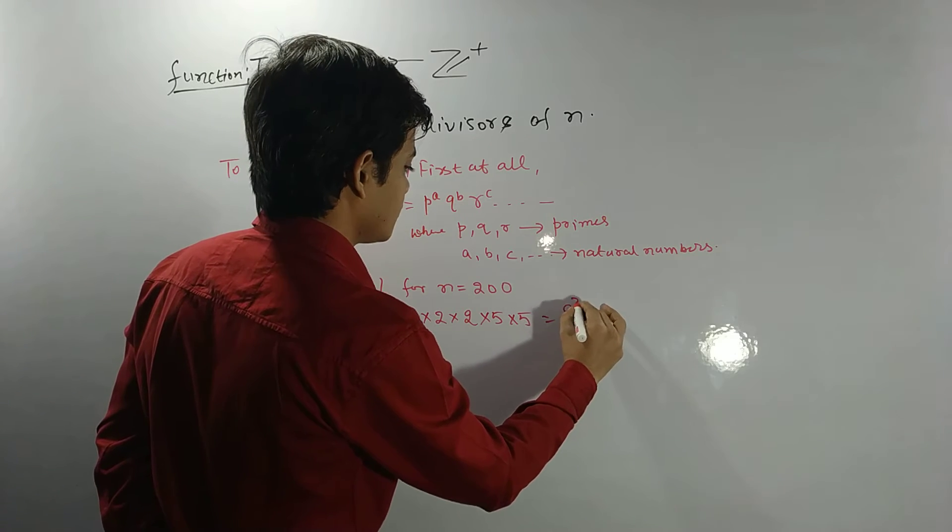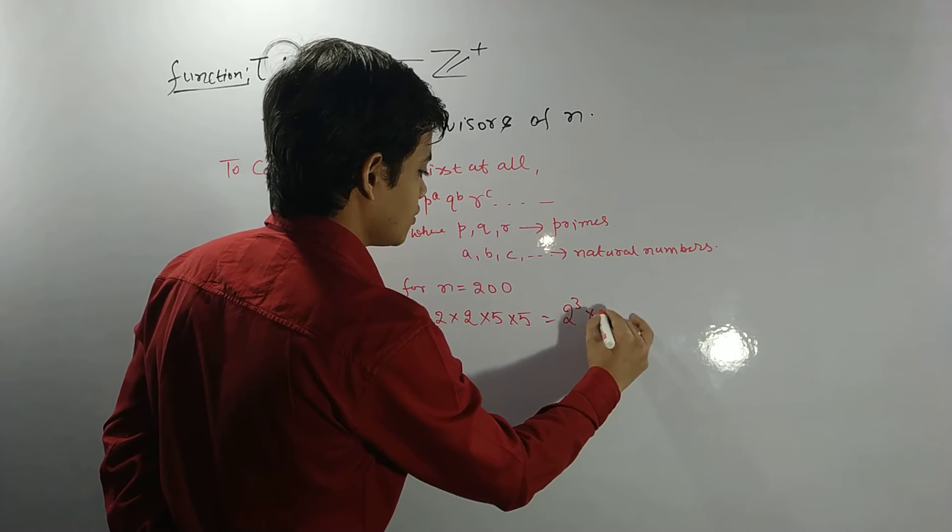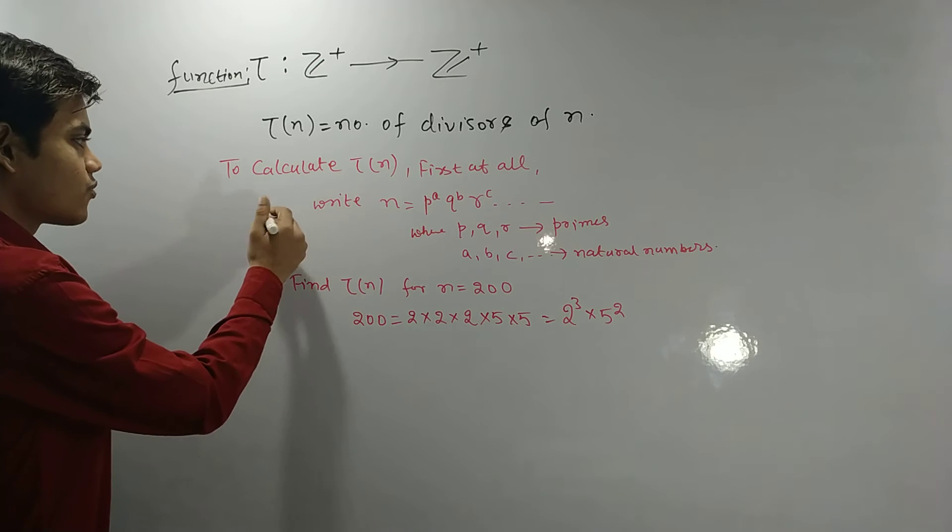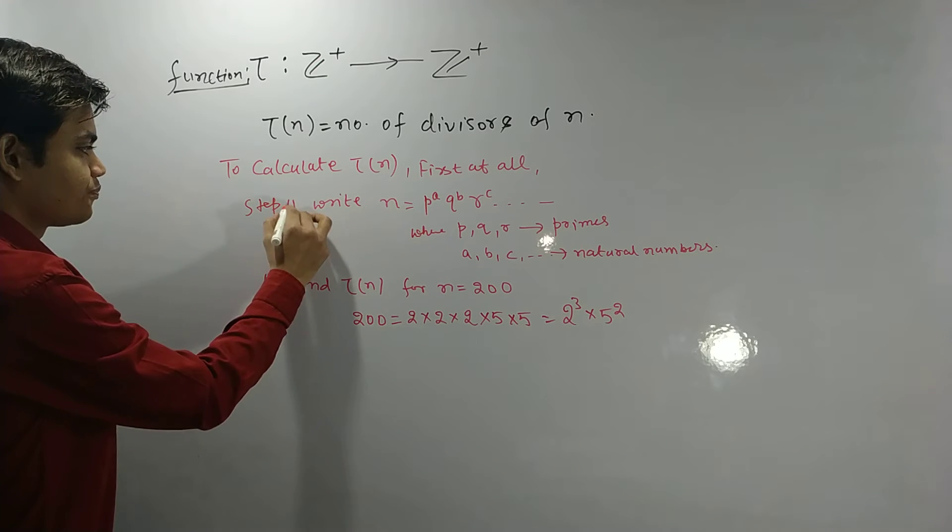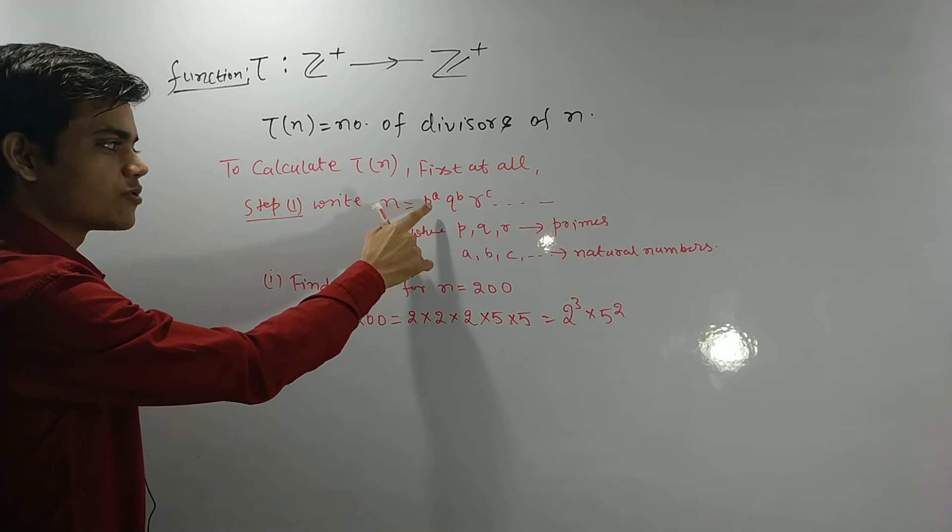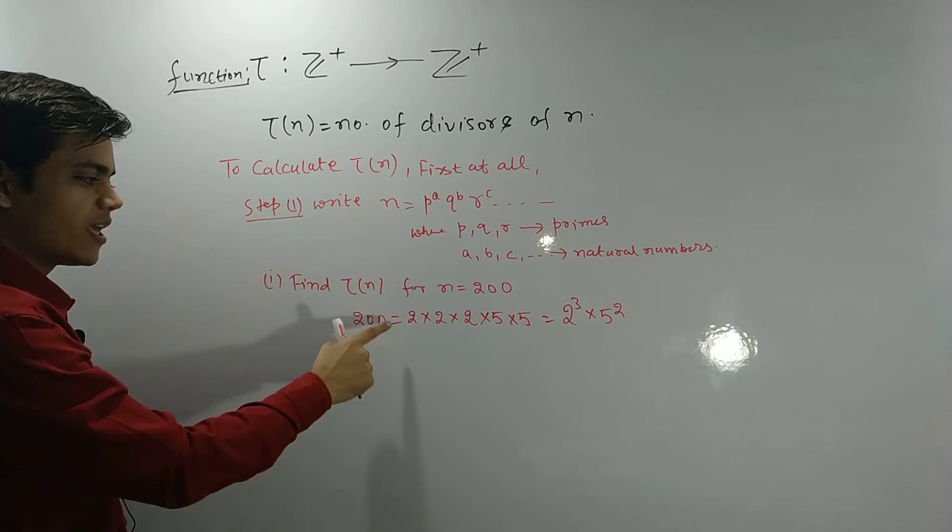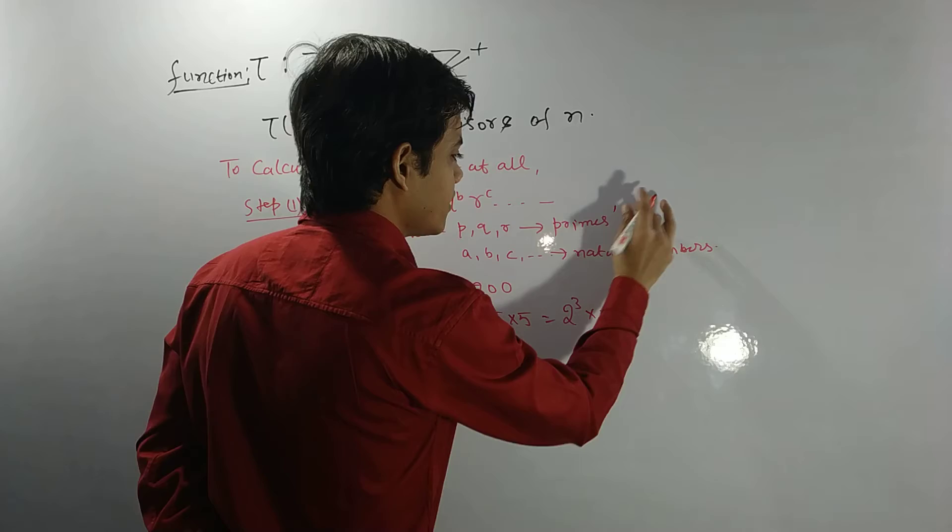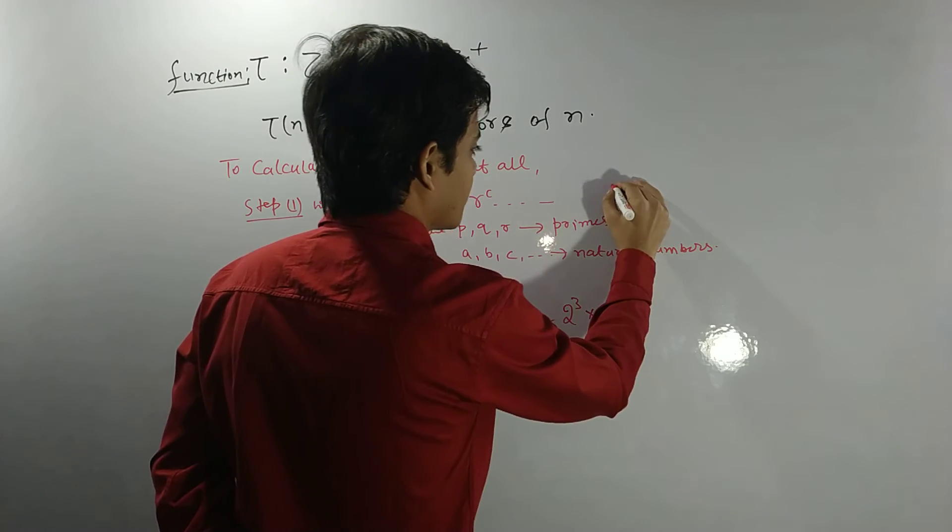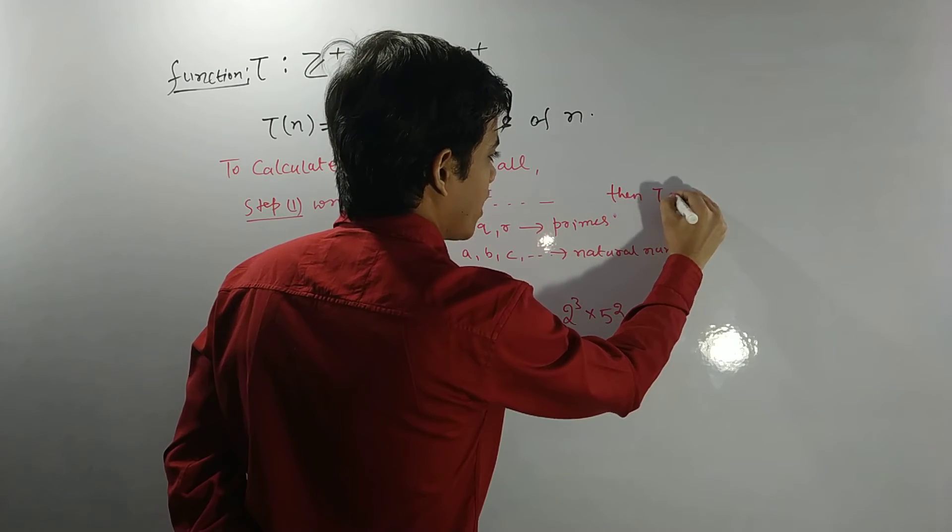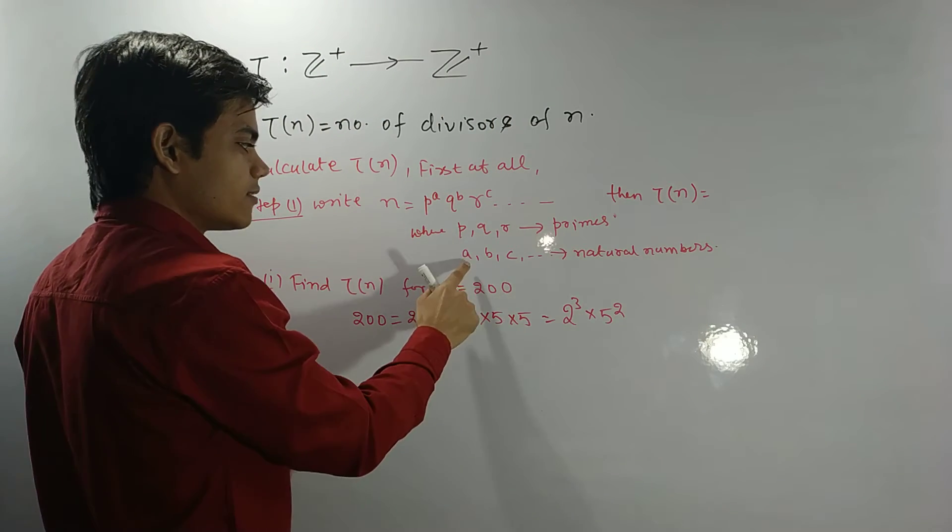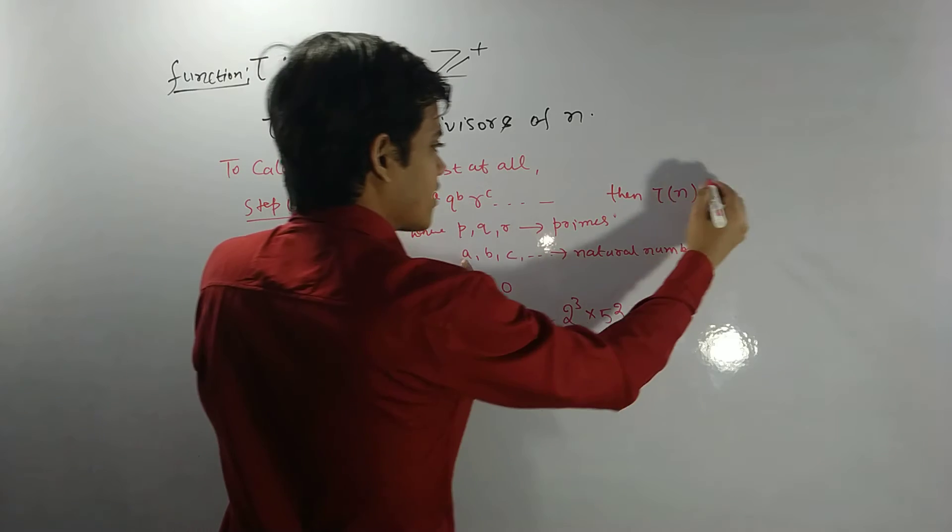This is 2 to the power 3 times 5 to the power 2. Now what is Tau(n)? So first of all, this was step 1, right? n equals like this, and we have taken this example. We are here. Then what is Tau(n)?